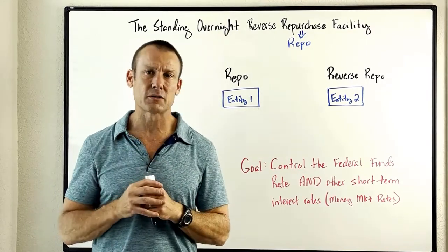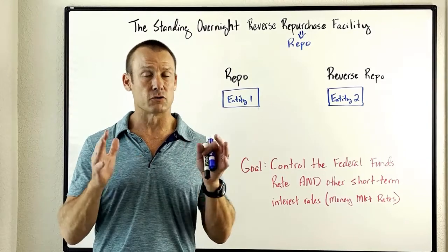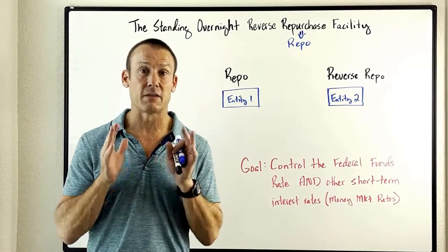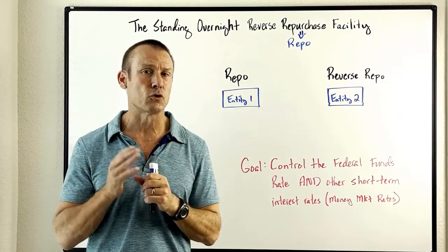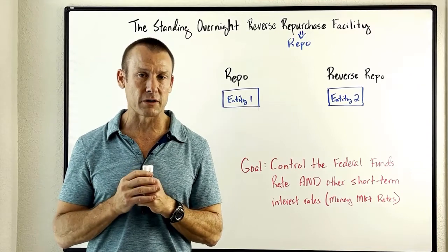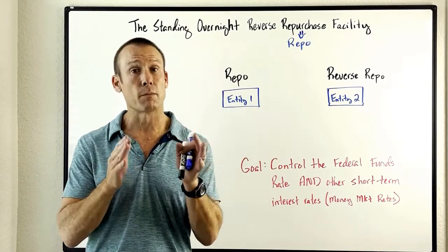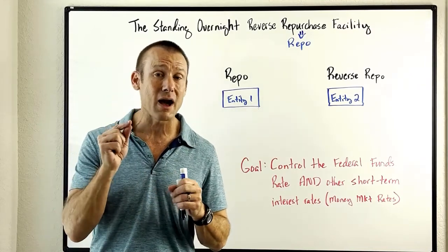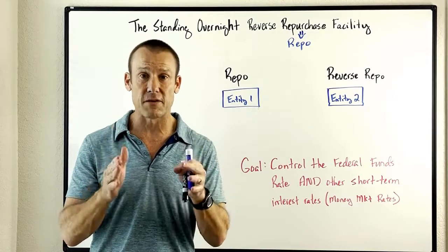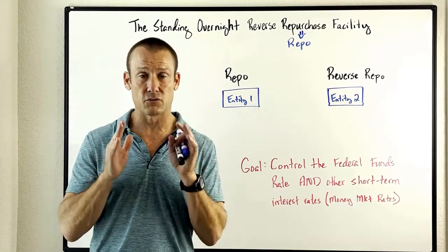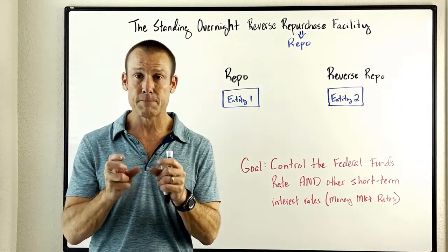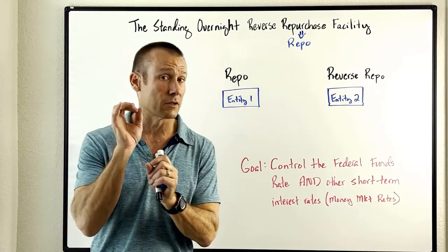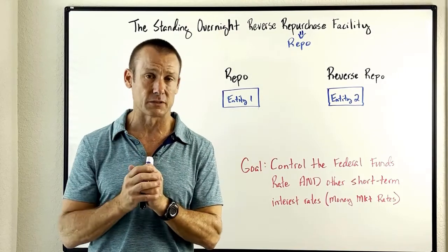Under that Limited Reserve Policy Framework, reserves were scarce. They were a need for banks, and the Fed was able to do open market operations — open market purchases and open market sales — to change the supply of reserves to change the federal funds rate. That was the situation pre-2008 under the Limited Reserve Policy Framework.